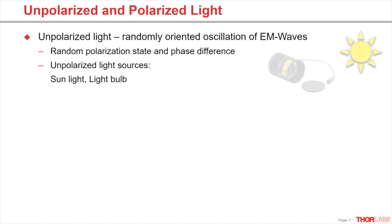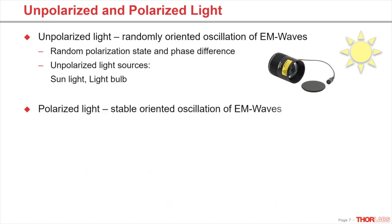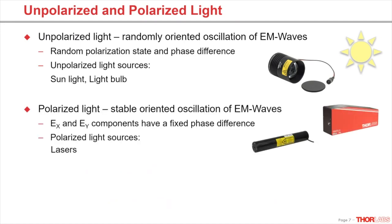Natural light is usually unpolarized. There are randomly changing polarization states and phase differences. The most obvious natural light source is sunlight. Other unpolarized light is emitted from ordinary light bulbs. Although this light can get polarized to a certain extent, for example when it gets reflected. Polarized light is given at a stable-oriented oscillation of electromagnetic waves. The X and Y components of the electric field have a fixed phase difference. Laser light is typically fully polarized.